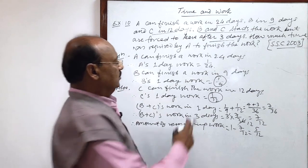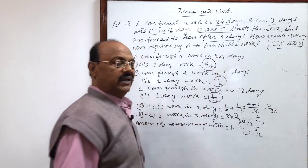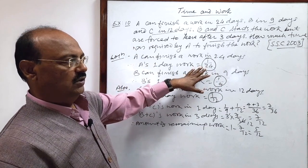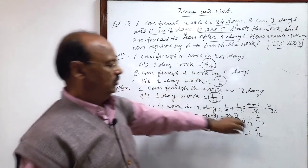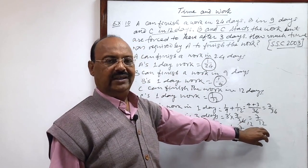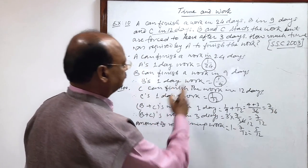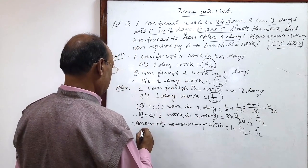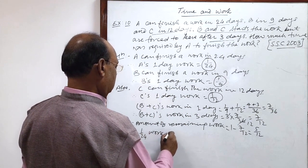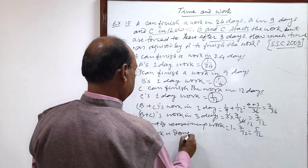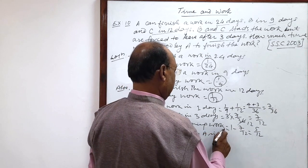And 1 day's work done by A is already given. So, this much work is done by A in 1 day. 1 by 24 work is done by A in 1 day. So, this much work will be done by A...